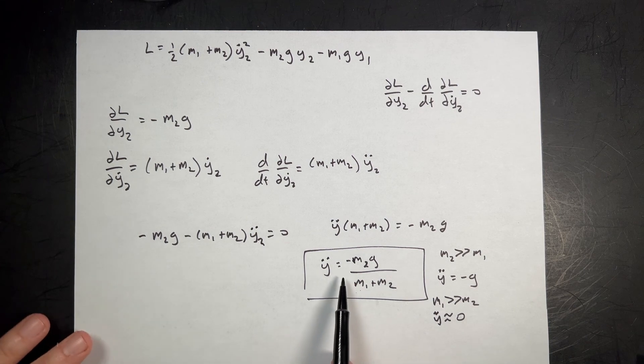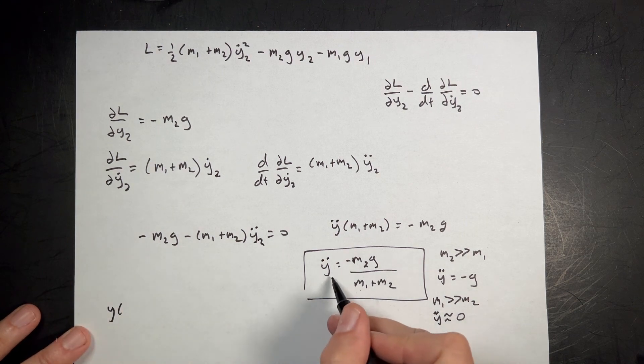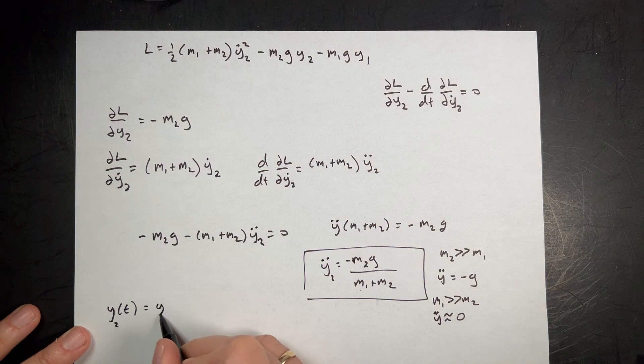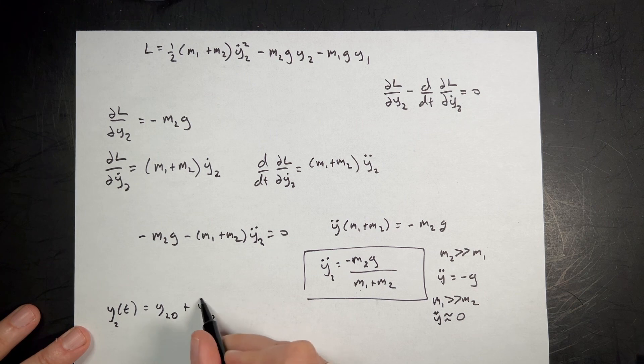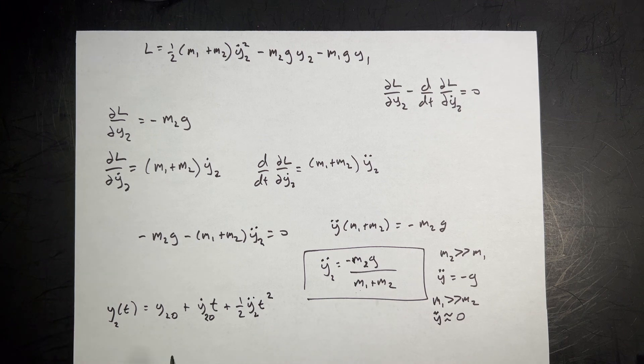If you want to solve this y as a function of time, you can integrate this twice. If you did that, you'd get y2 as a function of time equals y2 zero, the initial y position, plus y2 zero dot, the initial y velocity, times t, plus one half y2 double dot t squared. That's that acceleration right there. That's just a plain kinematic equation.